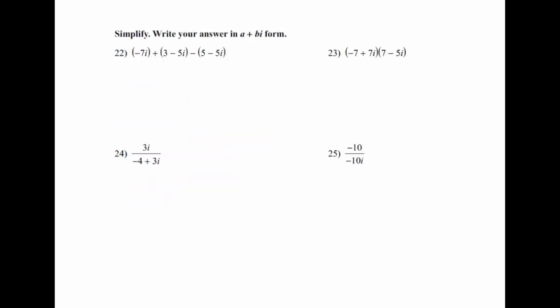This last section covers adding, subtracting, multiplying, and dividing with i's. On problem 22, add the first two parentheses together to get 3 minus 12i, then subtract the last one — distribute the negative, making it negative 5 and plus 5i. Add like terms to get negative 2 minus 7i.